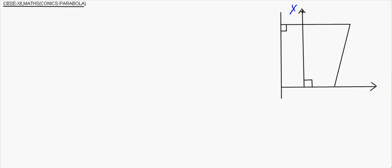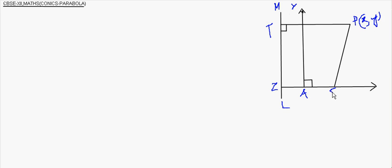This is the Y axis. This is A. This point is Z. This is L. This is T. This is M. This is point P with coordinates X, Y, Z. This point S with coordinates A, 0. This is the X axis. This small portion is A, and this is also A.